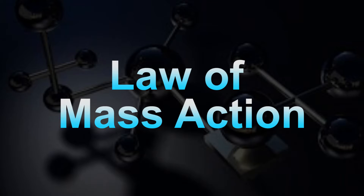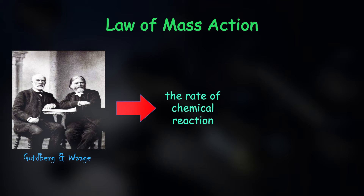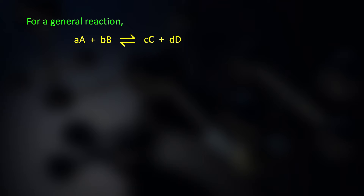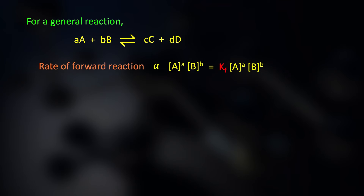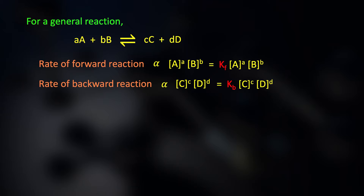The Law of Mass Action states that the rate of a chemical reaction is directly proportional to the product of the active masses of the reacting substances. For a general reaction A + B gives C plus D, the rate of the forward reaction is directly proportional to the active mass of the reactants, and the rate of the backward reaction is directly proportional to the active mass of the products.